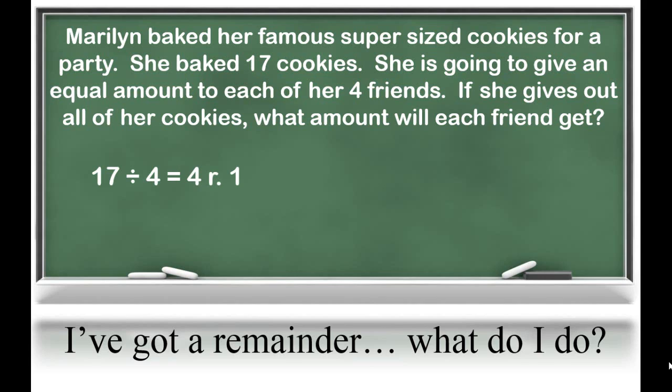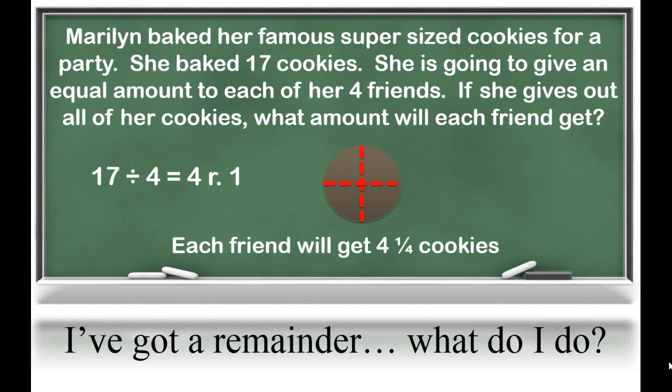Each friend will get 4 cookies, but there's 1 cookie left over. The question says if she gives out all of her cookies, what amount will each friend get? So we're going to need to give out that 1 remaining cookie. We could break it into 4 equal parts, so each friend would get 1 fourth of that last cookie. In total, each friend gets 4 and 1 fourth cookies.